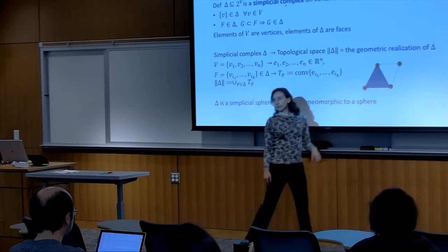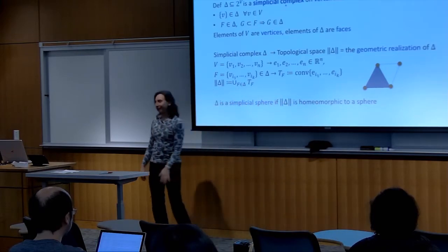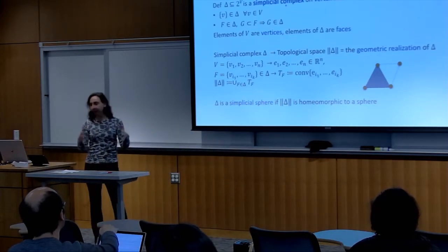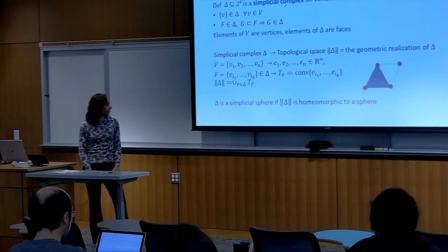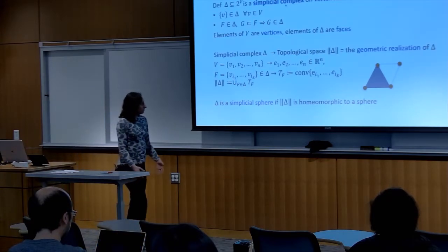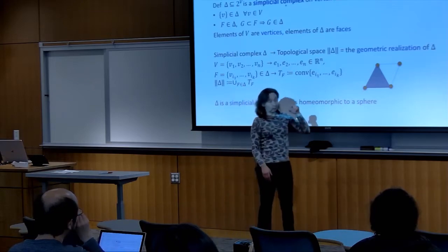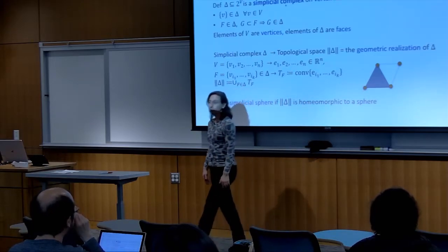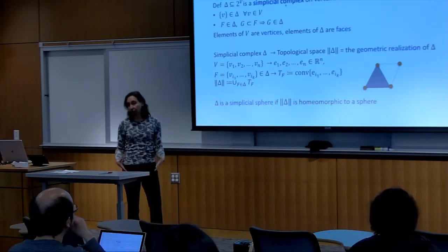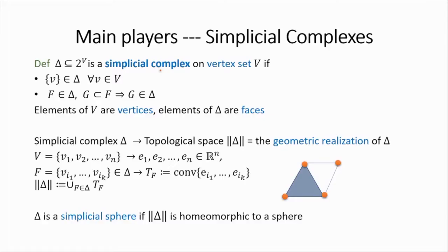Because my points were chosen affinely independently, if I take two faces f and g and look at the corresponding geometric simplices, the intersection of the two will just be the convex hull of their intersection — no redundant intersections. To define the geometric realization, I take the union of all those geometric simplices. Since it's a subset of R^N, there is a topology induced from R^N, and we can start talking about topological properties. We say our complex is a simplicial sphere if its geometric realization is homeomorphic to the sphere.